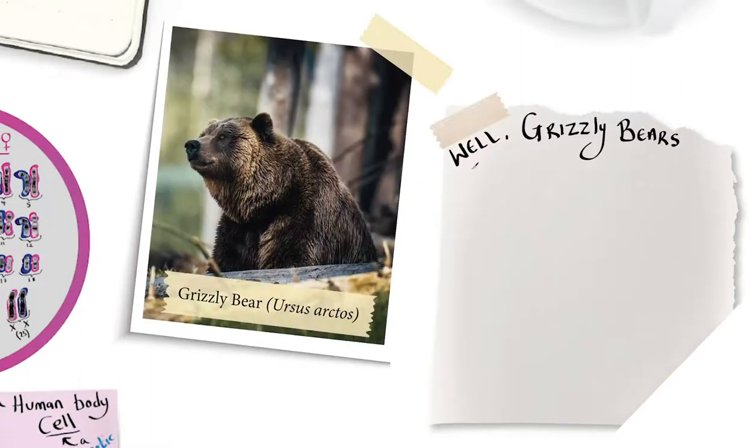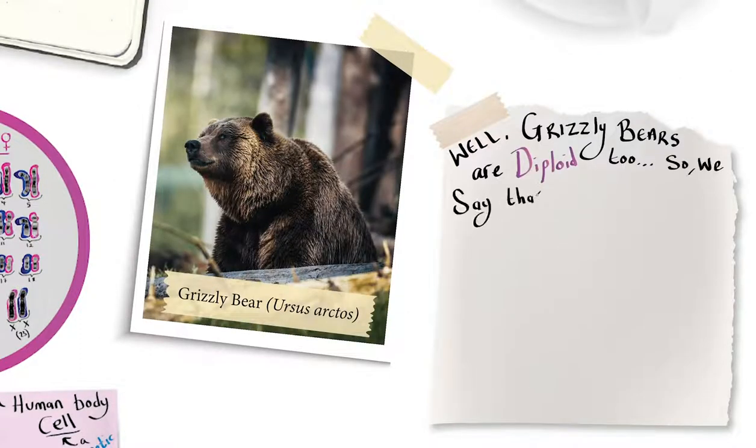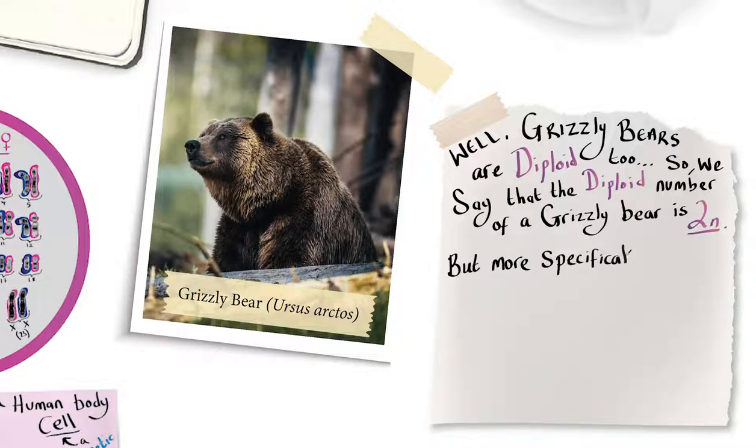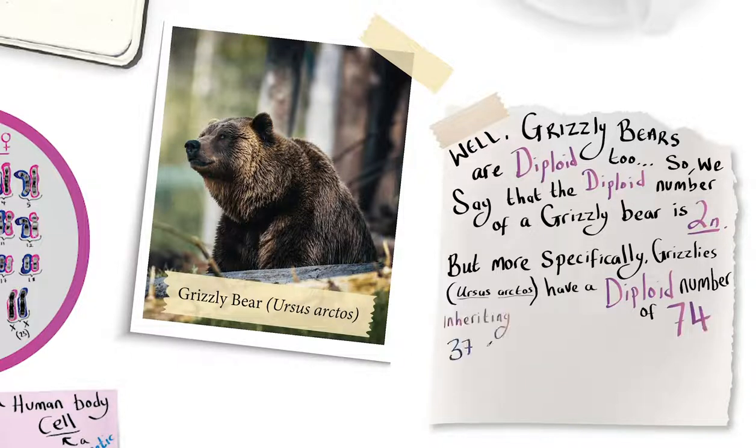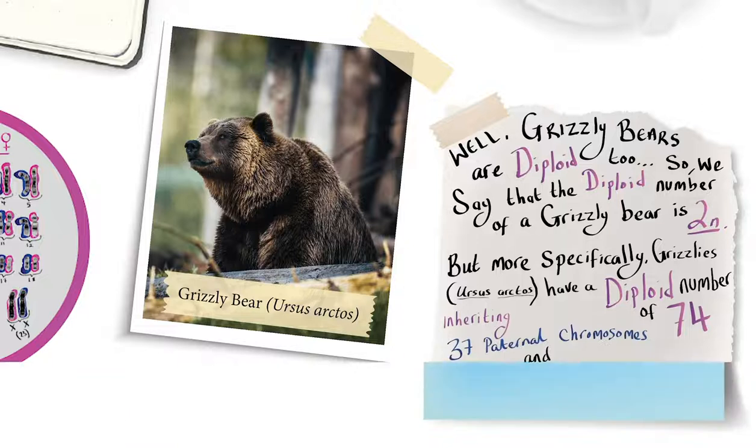Well, grizzly bears are diploid too, so we say that the diploid number of a grizzly bear is 2n. But more specifically, grizzlies, Ursus arctos, have a diploid number of 74, inheriting 37 paternal chromosomes and 37 maternal chromosomes.